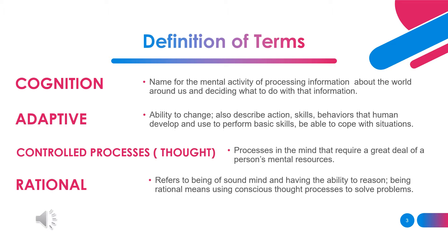Third, controlled processes — thought processes in the mind that require a great deal of a person's mental resources. Fourth, rational — refers to being of sound mind and having the ability to reason.